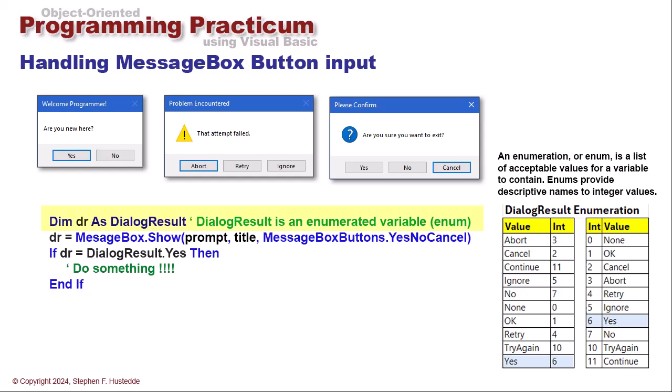We can dim a variable as a dialogue result data type. In this case, I've got dr for dialogue result. And dr equals, and we have the message box dot show and what we want to display for our prompt, title, and the buttons.